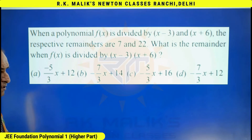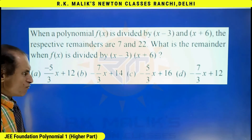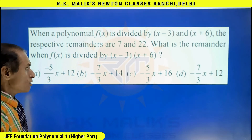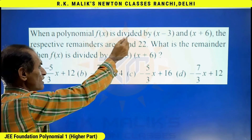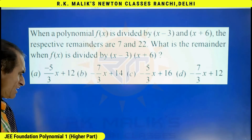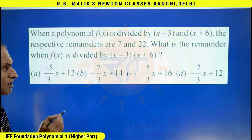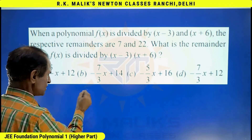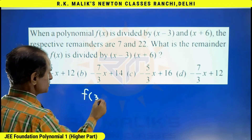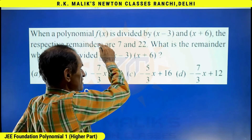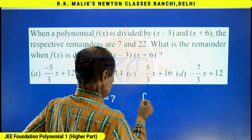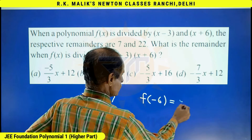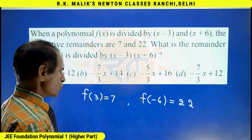Normal way should also be known to the student for the depth knowledge of the subject. Smart ways are useful for competitive level examinations. First I am going to do this question by normal way. As clearly given, when f(x) is divided by (x-3), remainder is 7, and keeping the remainder theorem in mind, I can say that f(3) = 7. And when f(x) is divided by (x+6), remainder is 22, meaning f(-6) = 22.